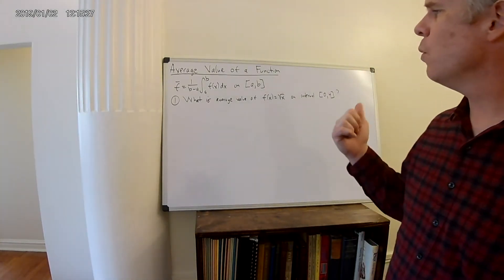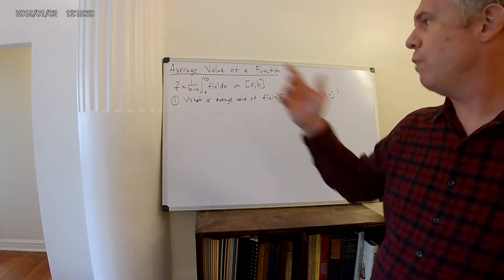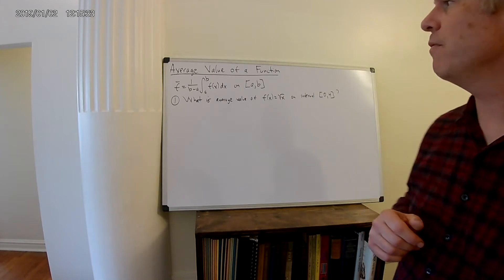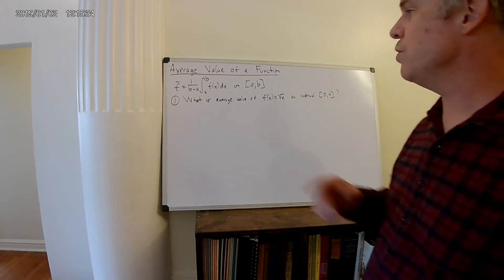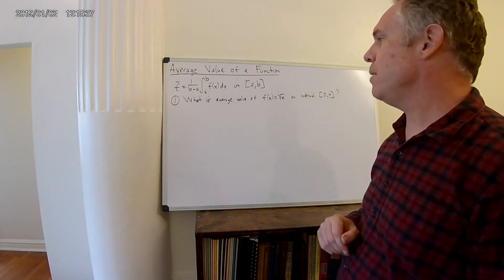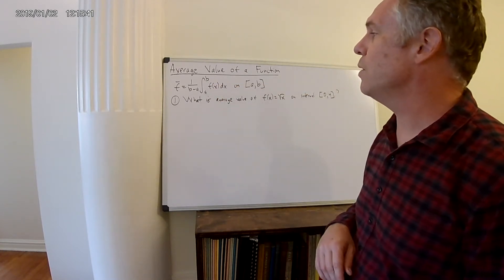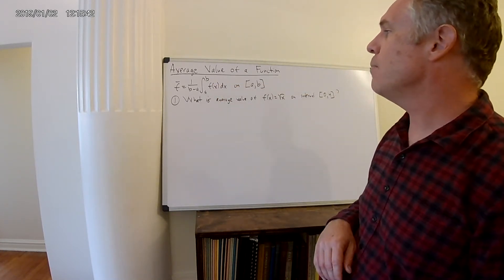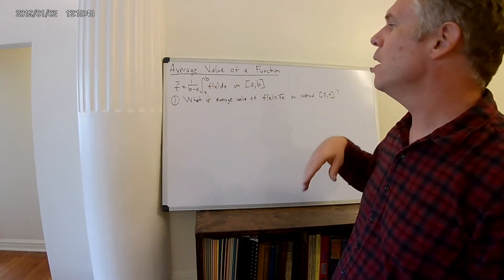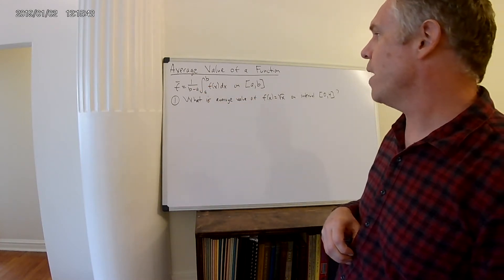In part one, we were talking about the average value of a function, and we derived this simple formula to calculate the average value of a function, which is equal to 1 divided by b minus a — the two endpoints of the interval — times the integral from a to b of f of x dx.